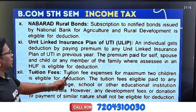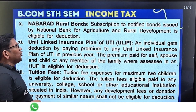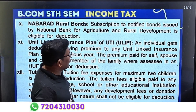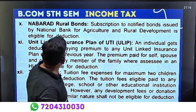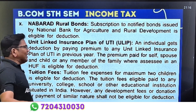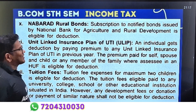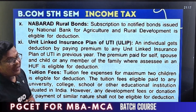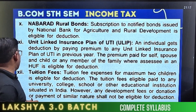Next is Unit Linked Insurance Plan — ULIP (UTI). ULIP is also eligible for deduction under Section 80C. The maximum deduction remains 1.5 lakh rupees.